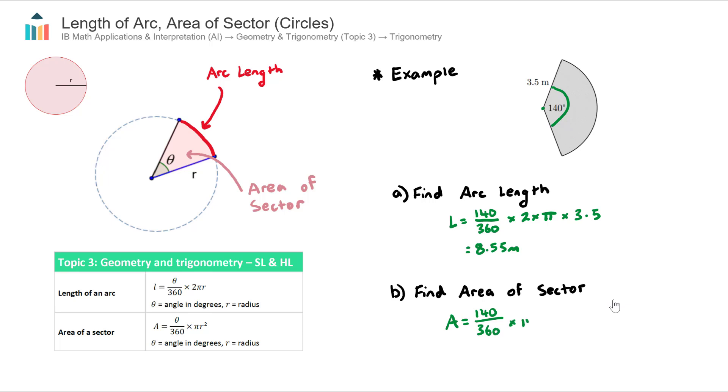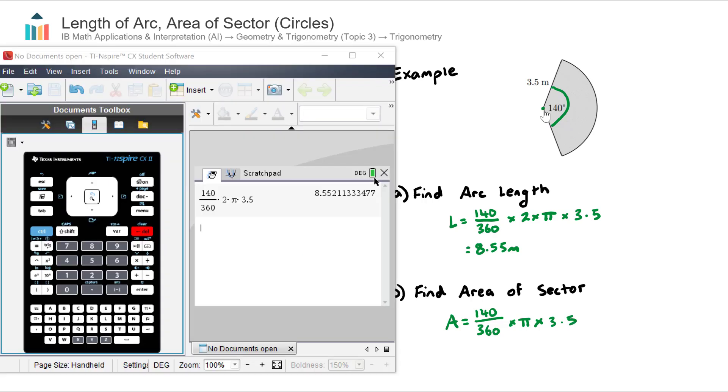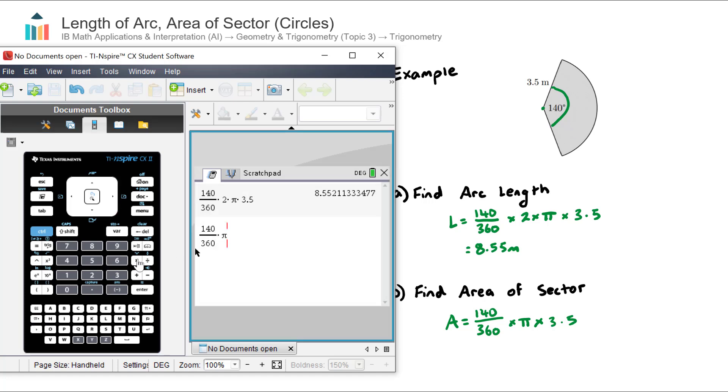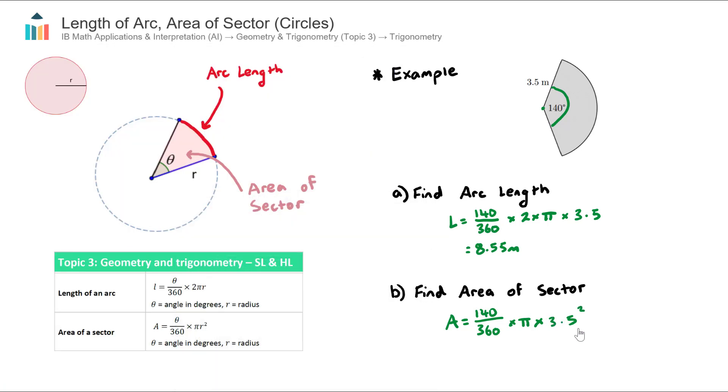...multiplied by pi multiplied by the radius of our sector which is 3.5, squared. We can use our calculator: 140 divided by 360 multiplied by pi multiplied by 3.5 squared, which is 14.96, rounded to 15 meters squared.